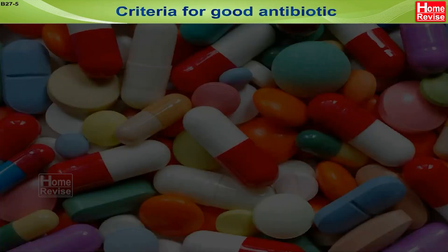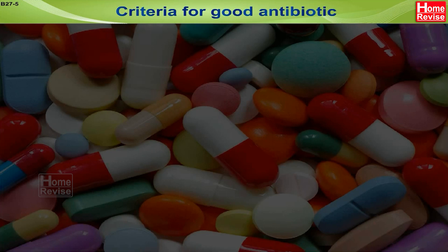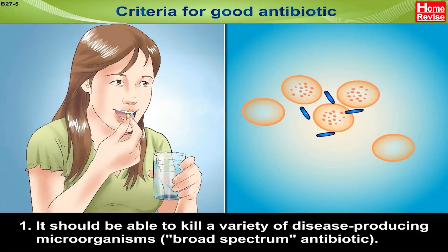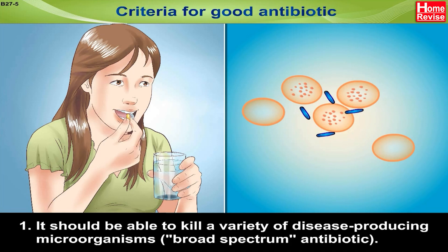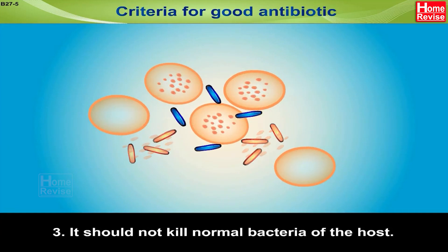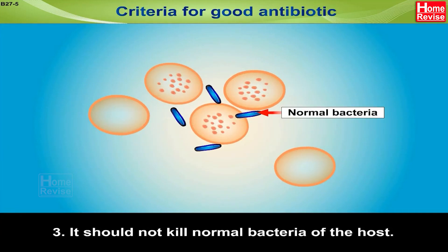Criteria for a good antibiotic: 1. It should be able to kill a variety of disease-producing microorganisms — that means it should be a broad-spectrum antibiotic. 2. It should not produce undesirable side effects. 3. It should not kill the normal bacteria of the host.